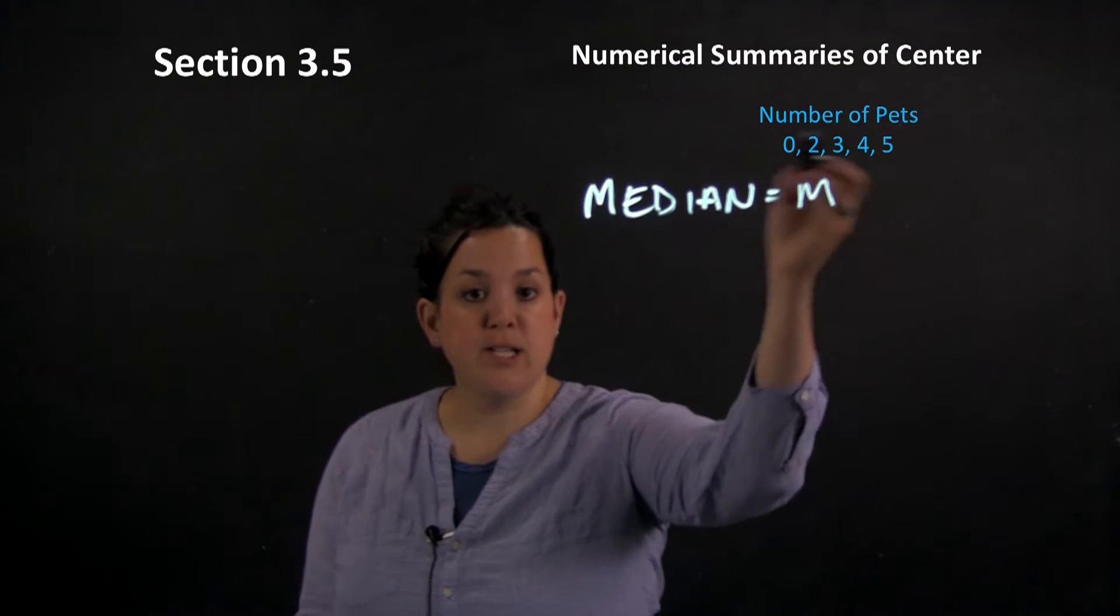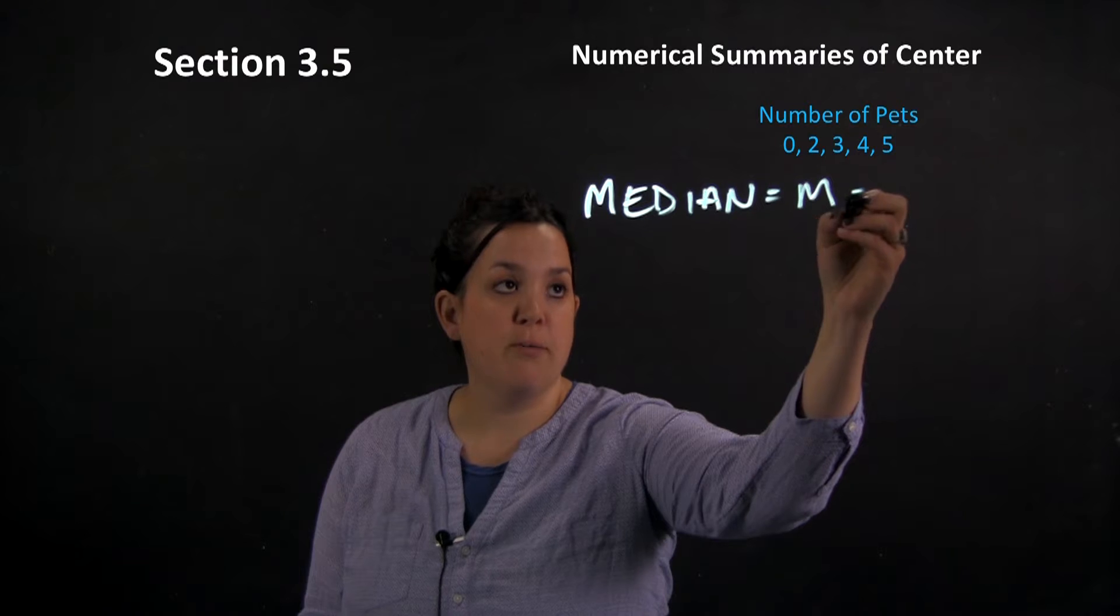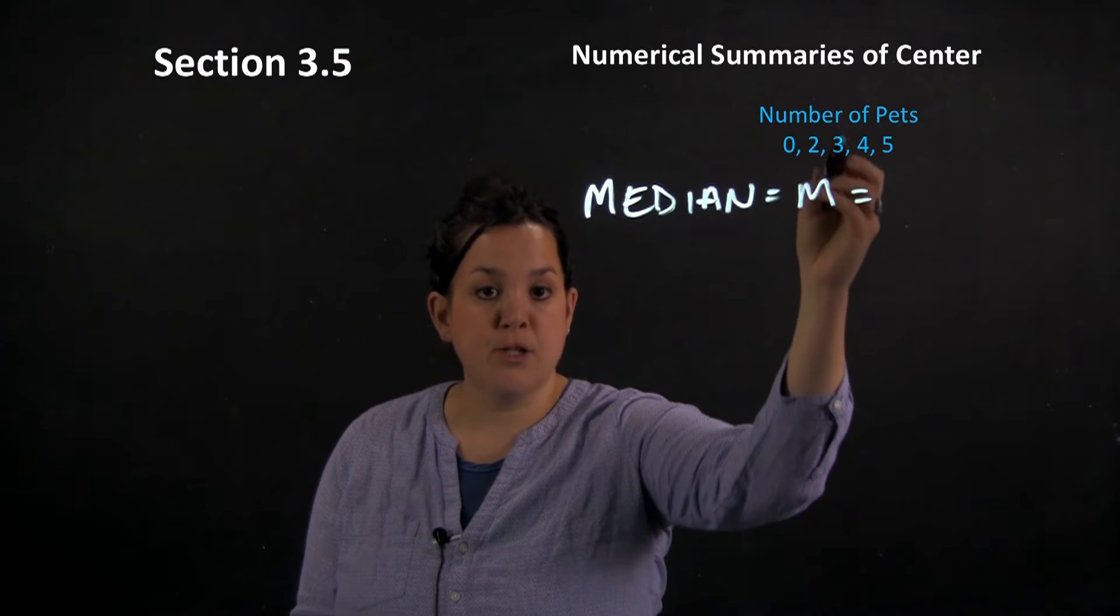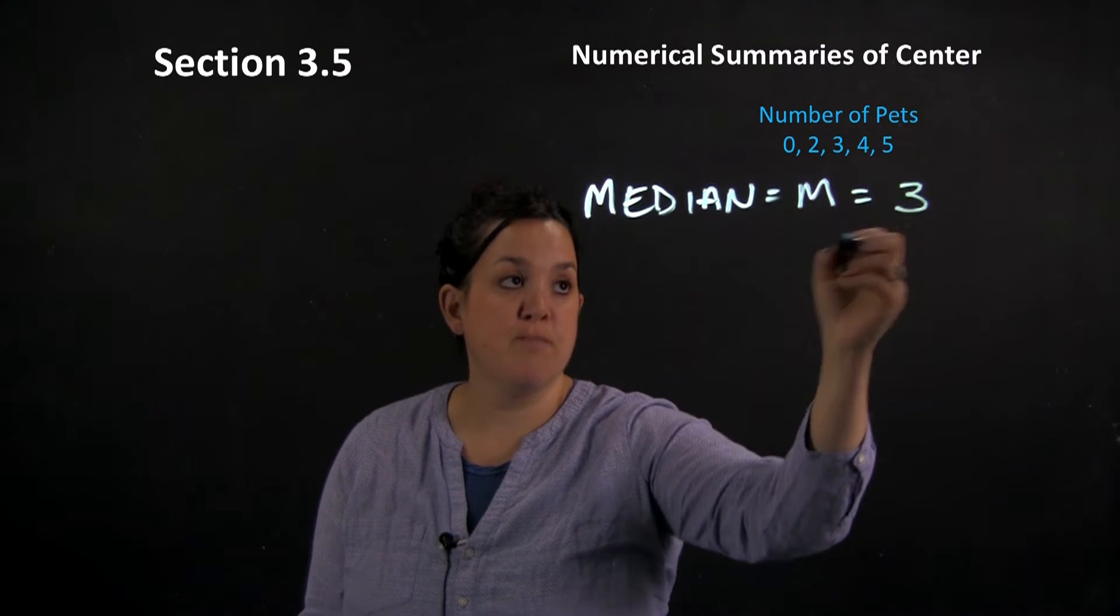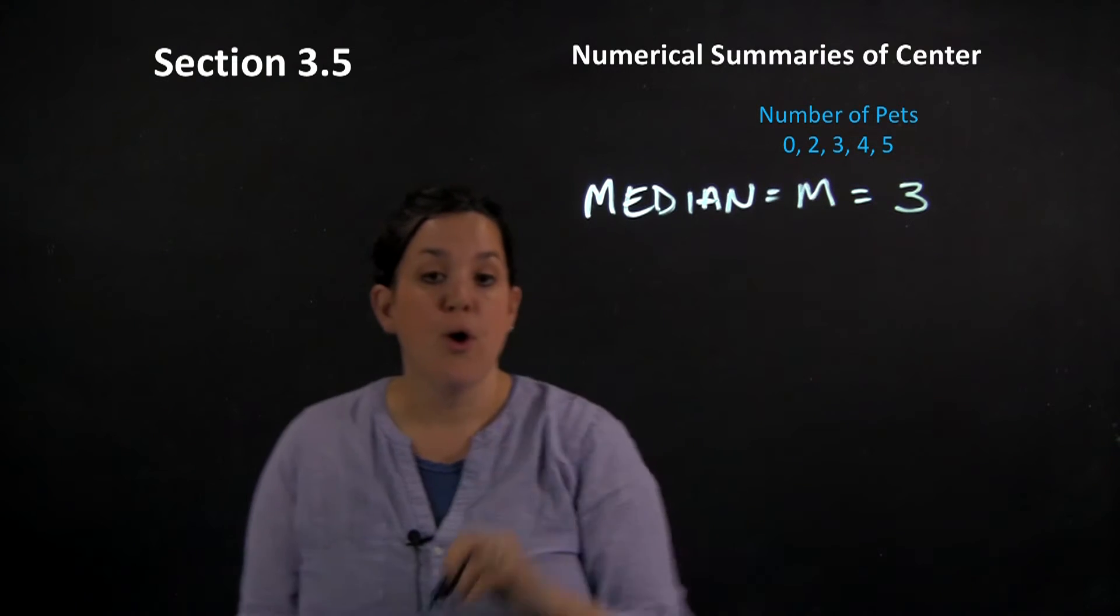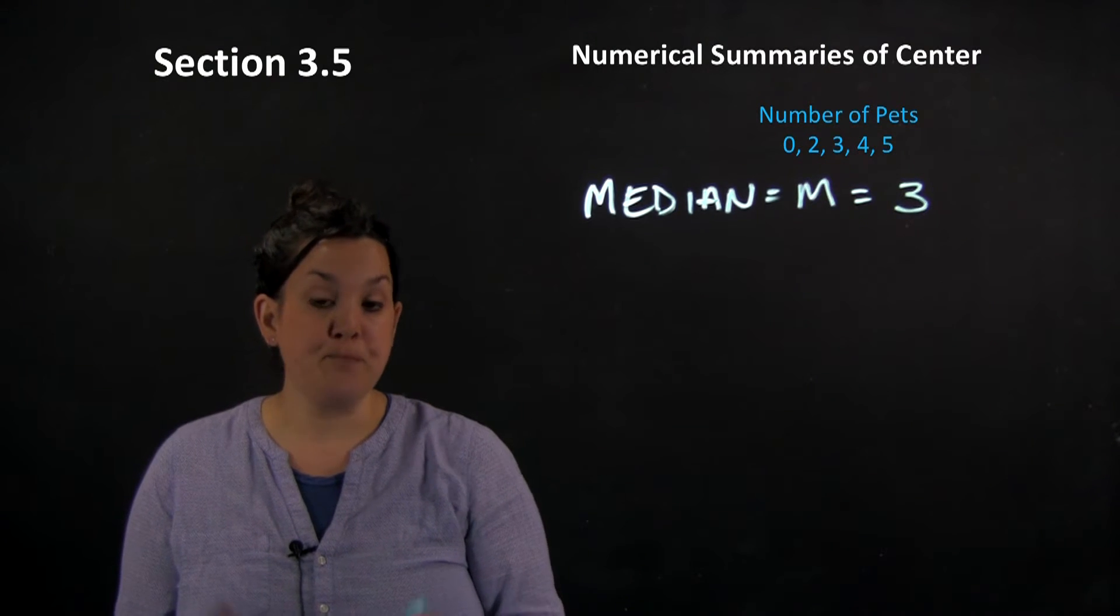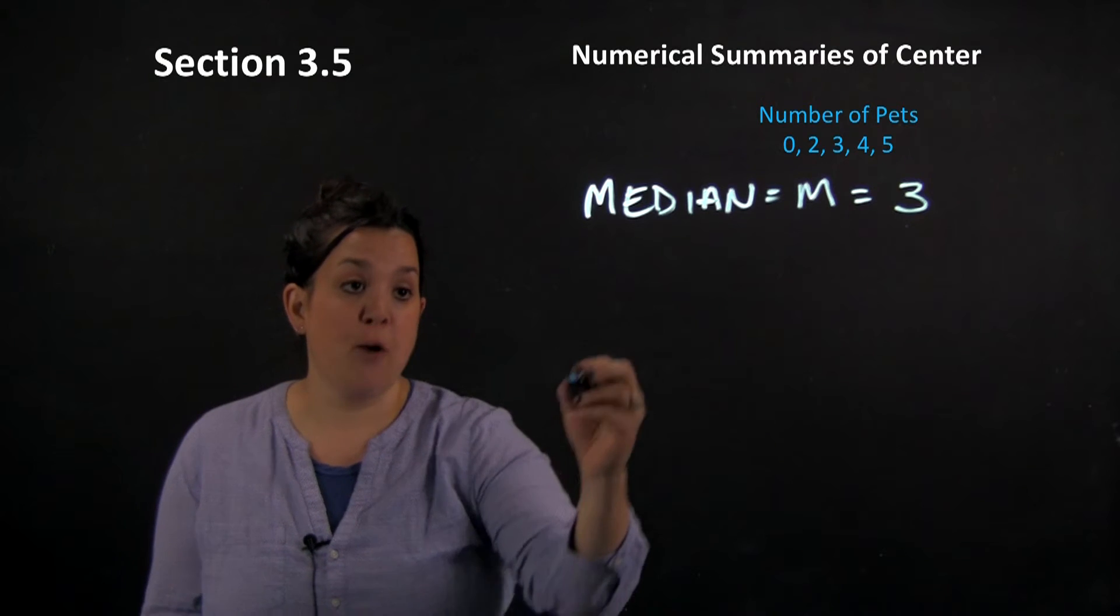So here, because our data is in order and because we have an odd number of observations, we can just simply locate our center, which is going to be three. So there's five observations, so three is going to be the middle of that data set.